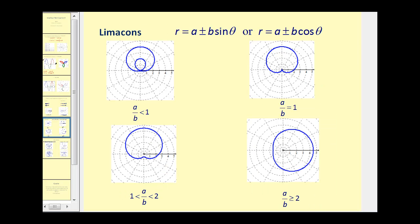Next we have limaçons, and they're in the form of r equals a plus or minus b sine theta, or r equals a plus or minus b cosine theta. If a divided by b is less than one, we have a limaçon with an inner loop.